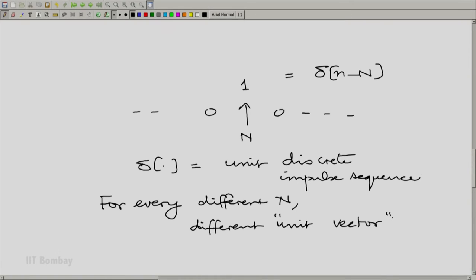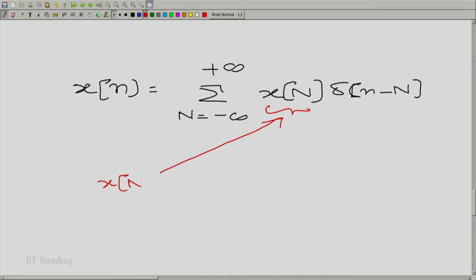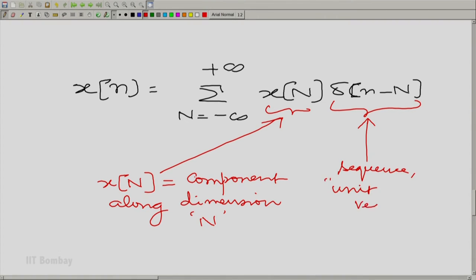When we write down x(n) in terms of its decomposition, we could write x of n as summation capital N going from minus infinity to plus infinity, x capital N times delta N minus capital N. We are saying the same thing, but in the language of vectors. x of capital N is the component along dimension capital N.